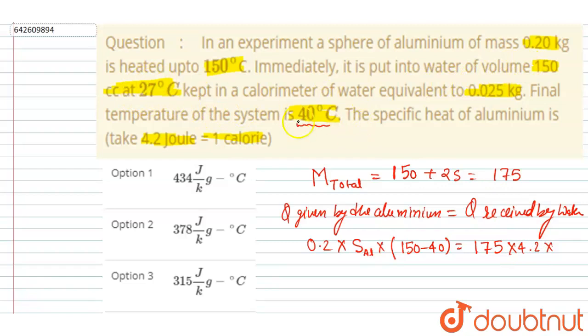Now it has a temperature of 40, so the change in temperature is 40 minus 27. So you can write now 0.2 into specific heat of aluminum into 110.